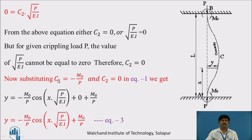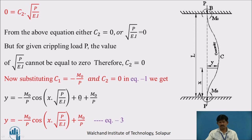Substituting C₁ = −M₀/P and C₂ = 0 into equation 1, we get: Y = −(M₀/P)·cos(x√(P/EI)) + M₀/P. This is equation 3.